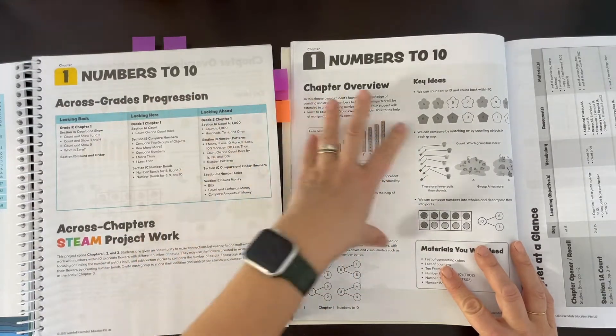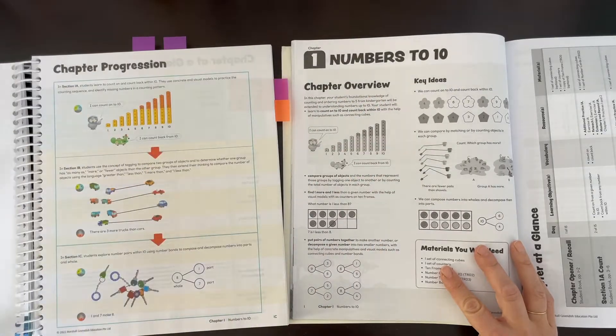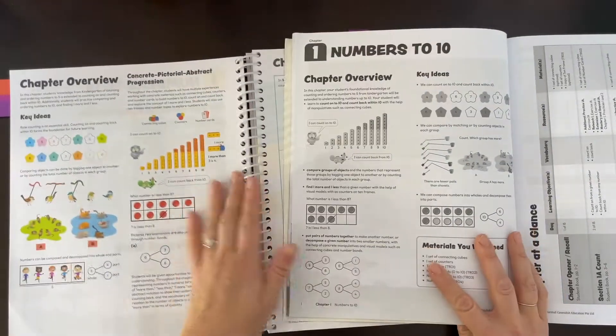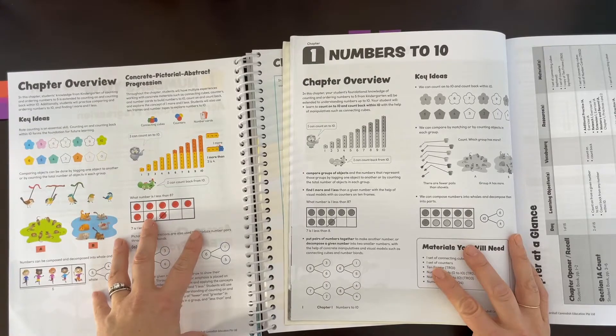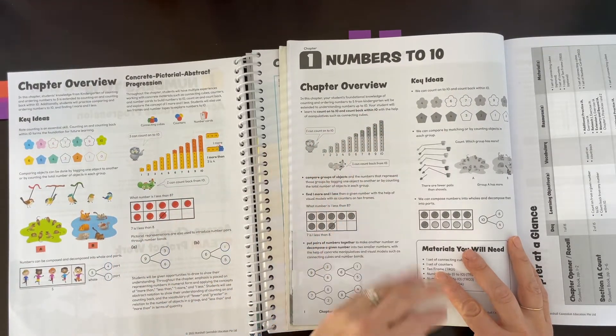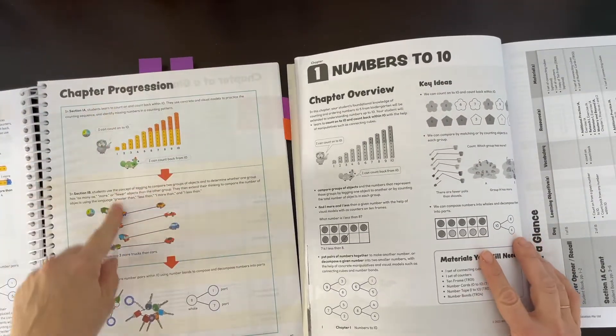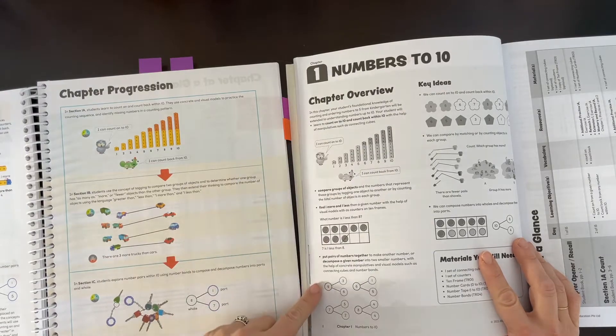Turn the page, and we get the chapter overview. This is basically a simplified version in the home instructor's guide. We have the chapter progression in the teacher guide—we do not have that in the home instructor's guide. Then we jump into the chapter at a glance.